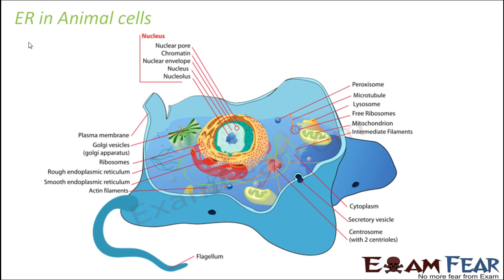In an animal cell, the endoplasmic reticulum is located here. The yellow-colored structure with lots of dots over it is the rough endoplasmic reticulum — those dots are the ribosomes, which make its surface rough. The red-colored tubular structures, which are smooth and have no dots on their surface, are the smooth endoplasmic reticulum. It is located quite near to the nucleus, the central structure, with the endoplasmic reticulum surrounding it.